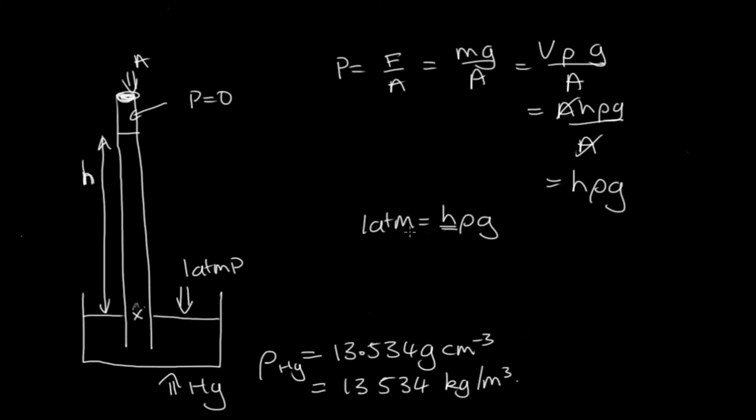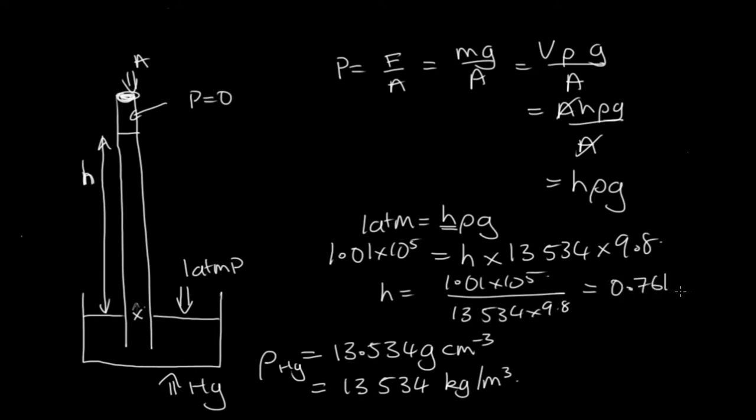So one atmosphere is 1.01 times 10 to the 5 pascals in SI units. H, this will give us in meters. We use ρ in SI units, which is 13,534 times 9.8. So h is equal to 1.01 times 10 to the 5 over 13,534 times 9.8. Solving that on the calculator, we end up with 0.761 meters, or 76.1 centimeters, or we can put this as 761 millimeters.